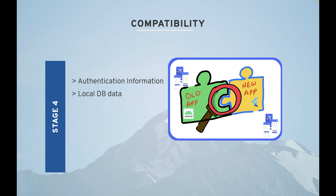Next is local DB data. You want to make sure that all local database data from the older app is preserved. For example, if WhatsApp migrated to Flutter, you would not want to lose your chat history. Your new app should adapt and retain the old database data.